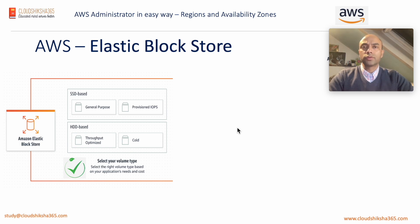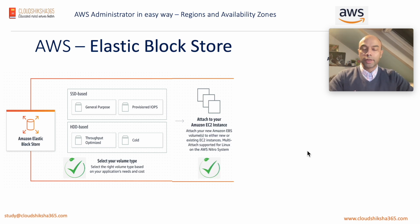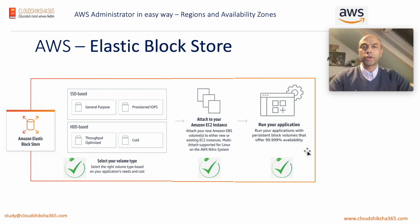Once you select the storage volume, it is attached to your Amazon EC2 instance — by default, storage selection and attachment happen during creation. You can also have multiple EBS volumes attached to your instances. Once attached, you start your instance and begin running your application. This was a short and quick overview of the storage types.